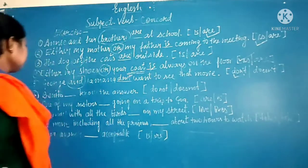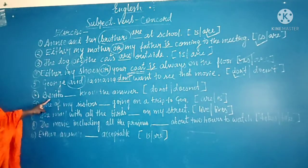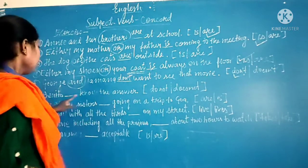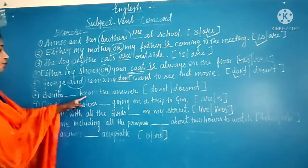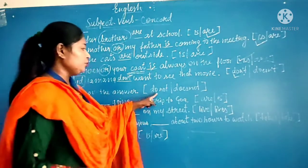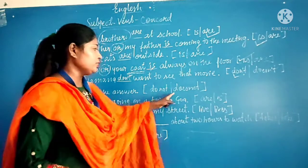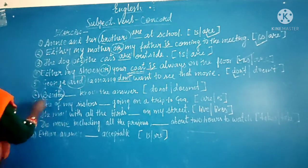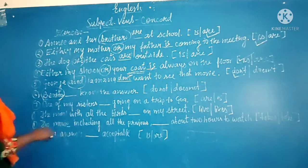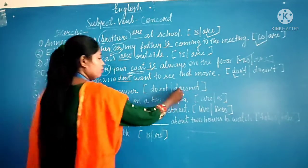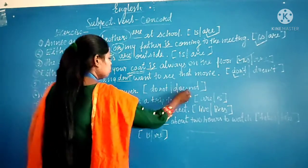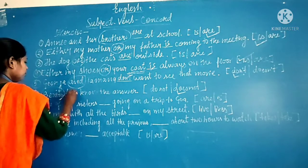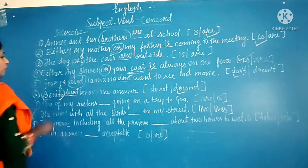The next sentence: 'When you ___ know the answer.' The options are 'do not' and 'does not.' The subject here is 'you,' so the matching verb form is 'do not.' When you do not know the answer.